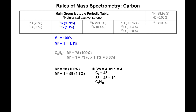There's one check you have to perform before calling it a day: the maximum number of hydrogens based on carbon content is 2n+2, where n is the number of carbons. So for one carbon: 2×1+2=4 max hydrogens; for two carbons: 2×2+2=6 max hydrogens. You can have up to the maximum, or less, but never more. This tells you whether you're missing other elements in your structure.